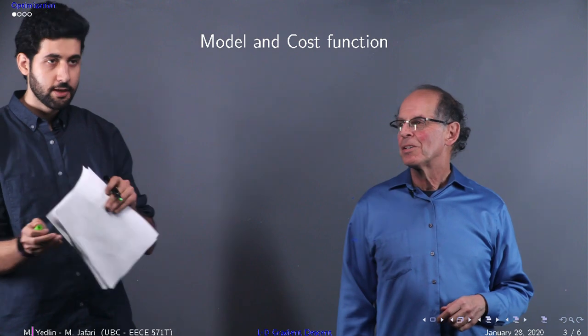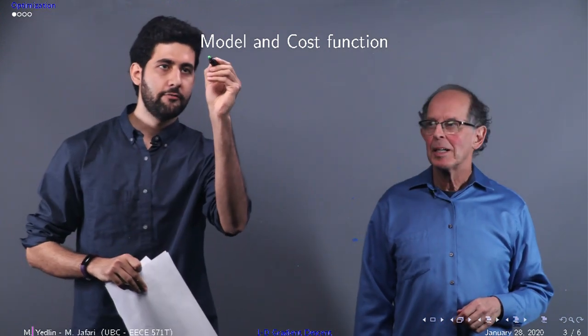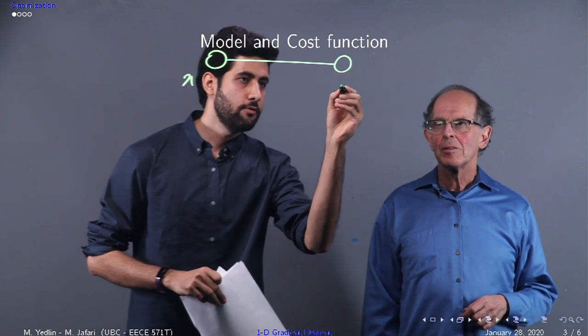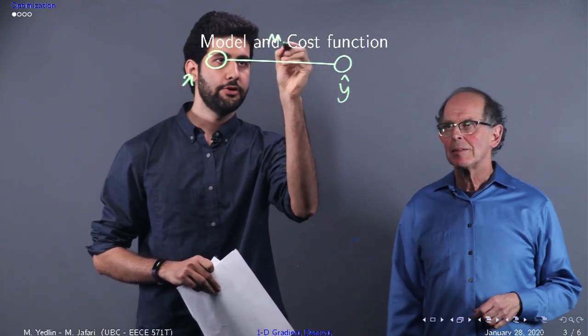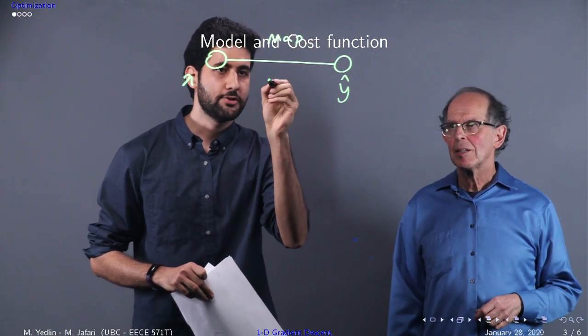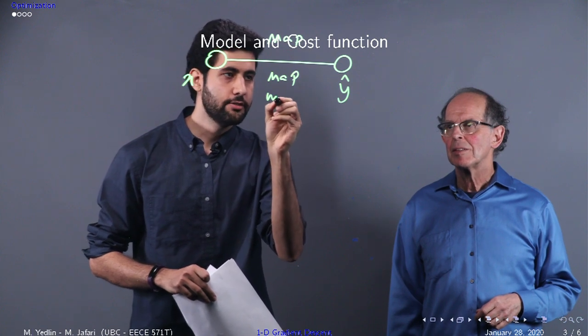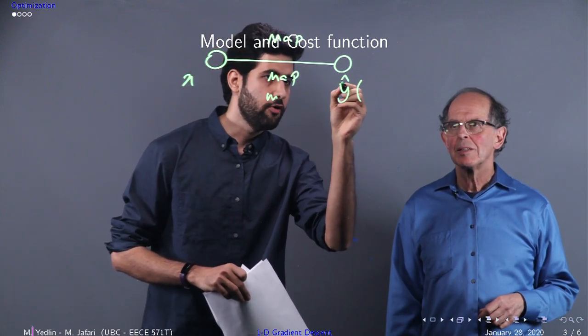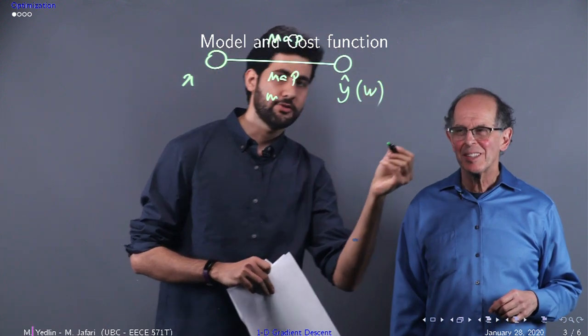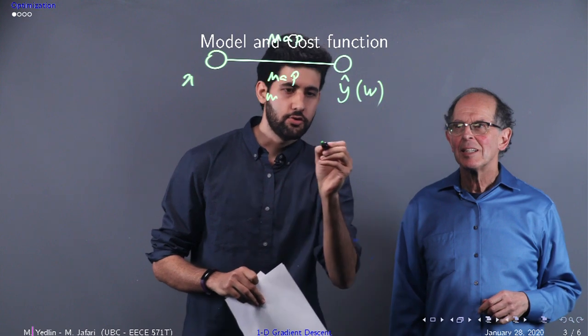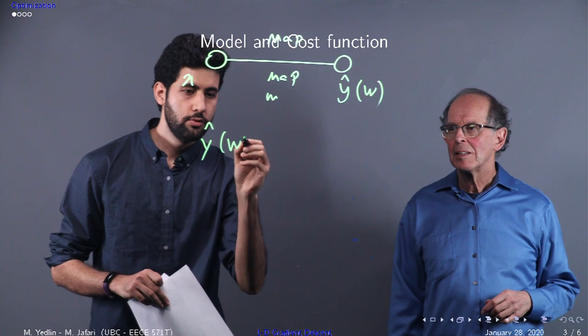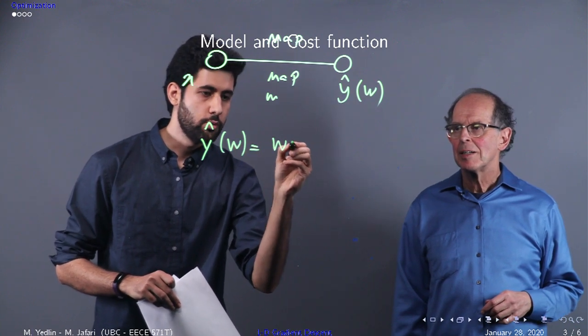So we have the same setup. We have the input x, we have an output y hat, and there's a mapping here that depends on weight. This would be y hat of w. It's simple math, just y hat of w equals w times x.